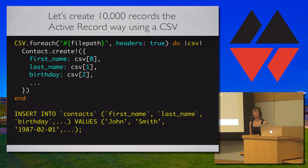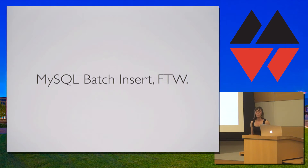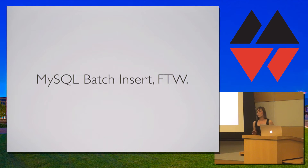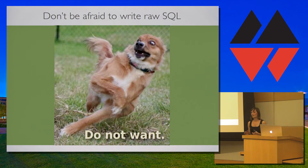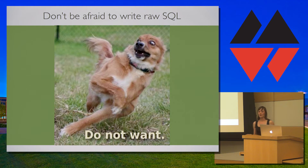What if there was a way to insert more than one record at once? After a lot of research, I found the quickest way was to use MySQL batch insert. This method will speed up our creation of 10,000 records quite a bit. Don't be scared, but this means we're getting our hands dirty with raw SQL. Unfortunately there is no comparable method in ActiveRecord, so we have to abandon it for this example.